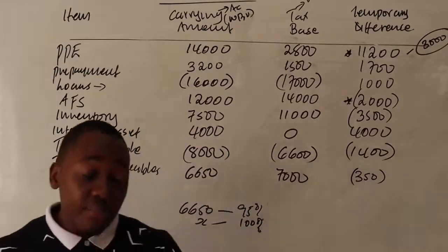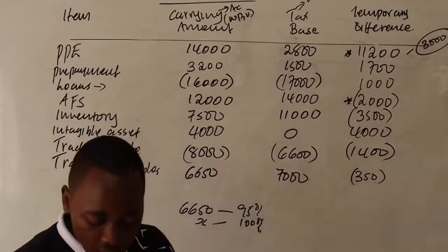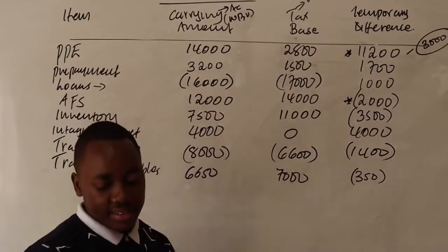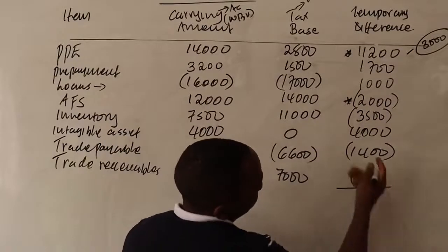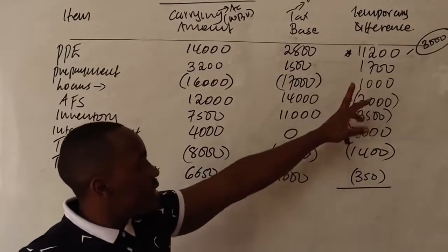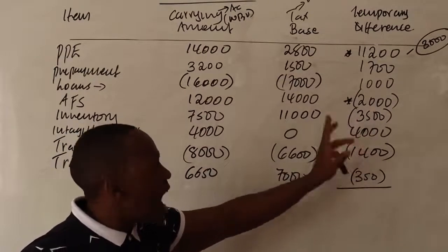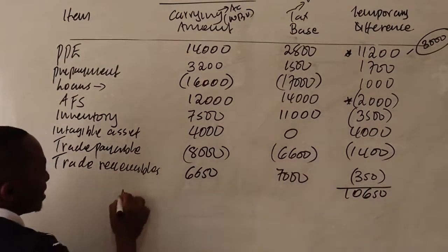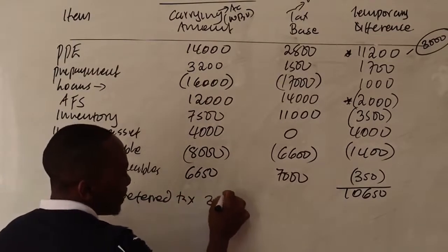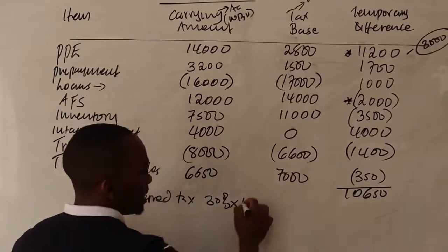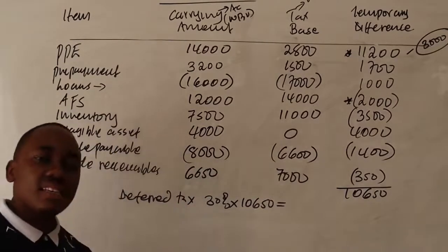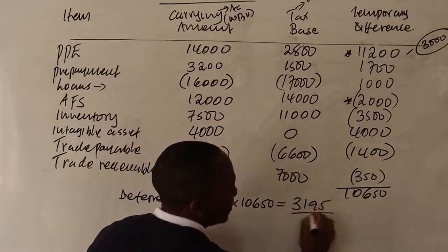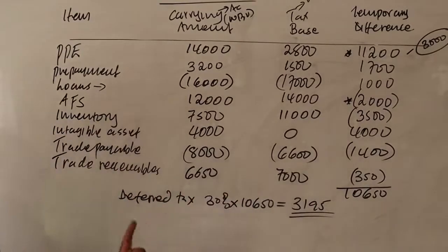Note nine: tax rate applicable is 30%. Required number one — deferred tax balance as at 30 April 2017. Add all temporary differences: 1,200 + 500 + 1,000 + (negative 2,000) + (negative 3,500) + 4,000 + (negative 1,400) + 350 = total of 10,650. Deferred tax = 30% × 10,650 = 3,195. This is the deferred tax balance to be presented in the statement of financial position.